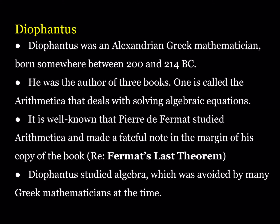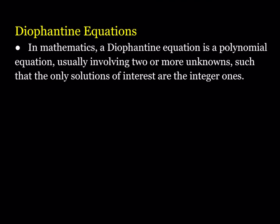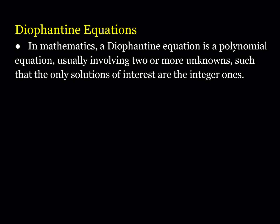The proof is quite complicated and not a direct proof. Diophantus studied algebra at the time, which was avoided by many Greek mathematicians. Diophantine equations are basic equations with integer solutions, and most of the time we have more unknowns than the number of equations, which makes them really interesting to solve.